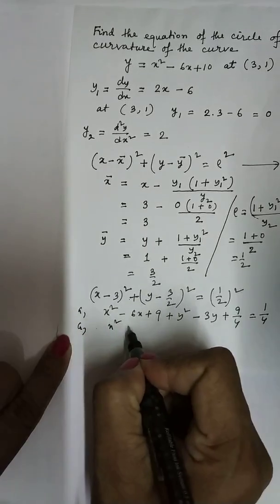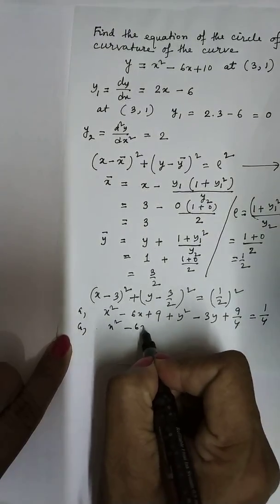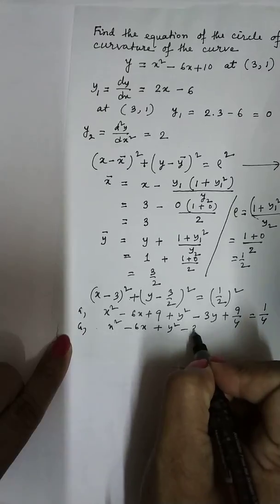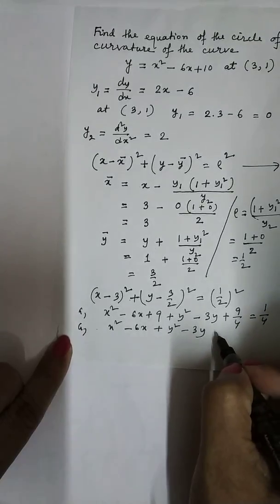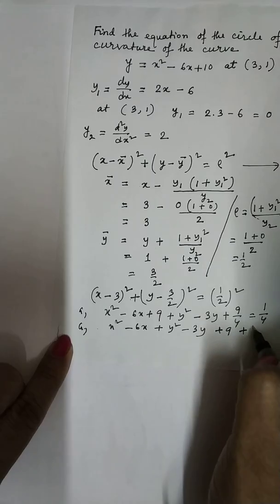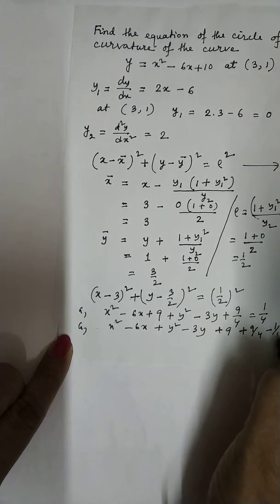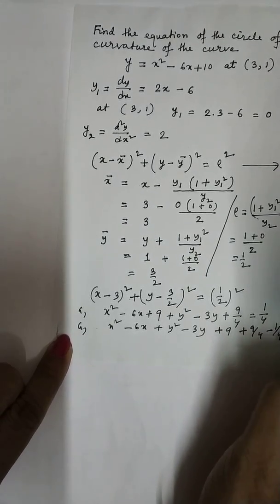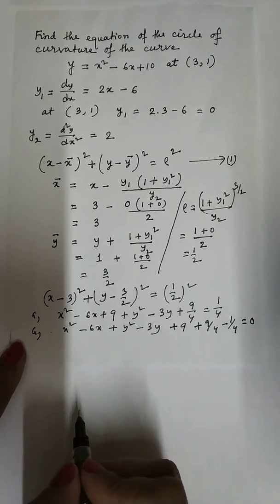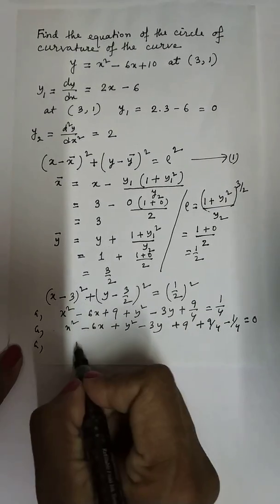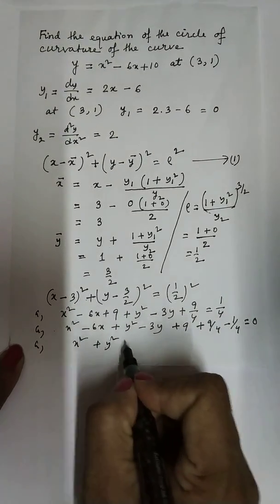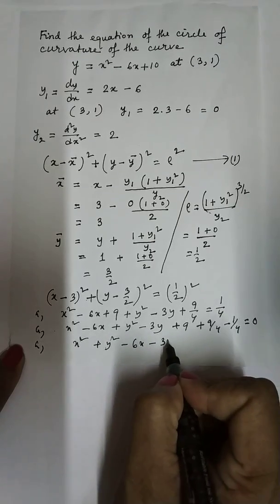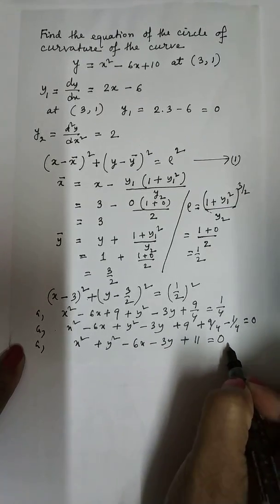Or x² - 6x + y² - 3y + 9 + 9/4 - 1/4 equals 0. Or x² + y² - 6x - 3y + 11/4 equals 0.